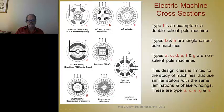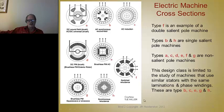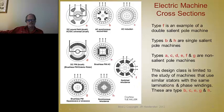This is a very interesting slide that compares machine cross-sections to give you an idea of what these three machines look like conceptually. This was developed by Professor Tim Miller from the University of Glasgow, my co-author for a couple of books on brushless machines. The chronology starts with the commutated DC motor — here are the field windings in the stator, armature windings on the rotor, commutator bars, and brushes. Each coil spans 180 degrees across two poles.